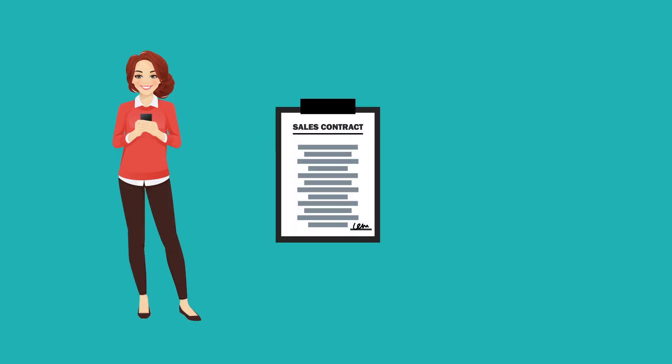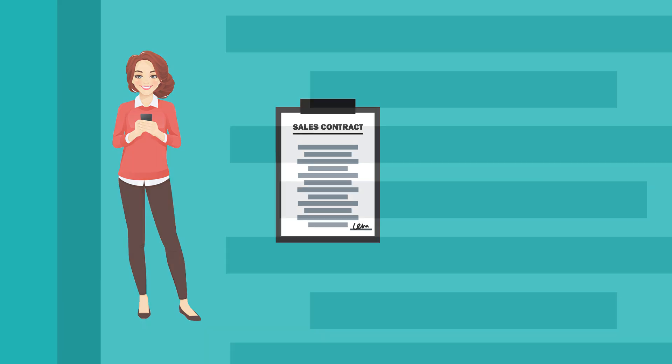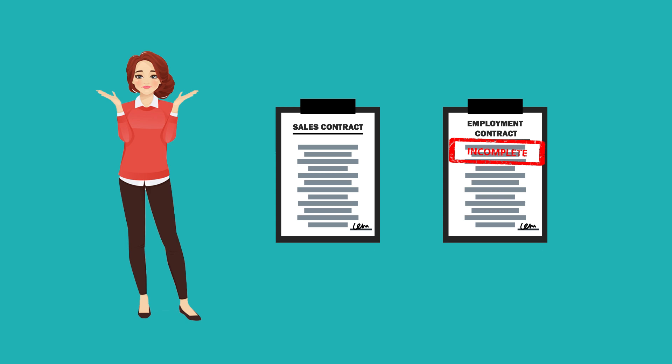But unlike sales contracts, which specify exactly who gets what service or goods for what price, employment contracts are incomplete. This is because they cannot specify how much effort employees should put in or how motivated they should be while working. This information is not visible to you and therefore not verifiable, so you would have no legal recourse.